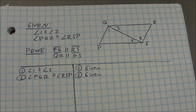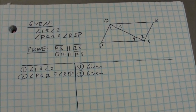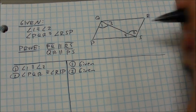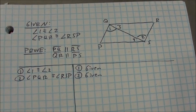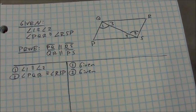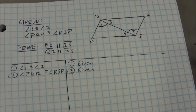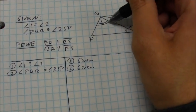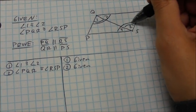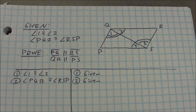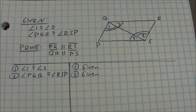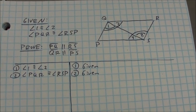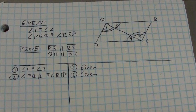Here's an example parallel line proof. You can see I have a quadrilateral. I'm given two angles congruent, angle 1 and angle 2, and I'm told that angle PQR is congruent to RSP — this larger angle here is congruent to that larger angle there. I'm supposed to prove that the opposite sides are parallel. An alternate version could ask me to prove it's a parallelogram, which is a quadrilateral with opposite sides parallel.